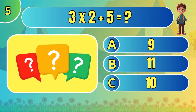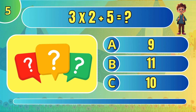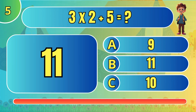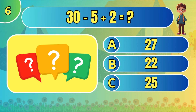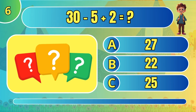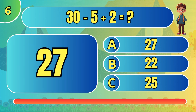What is 3 times 2 plus 5? 11. Subtract 5 from 30 and add 2. 27.